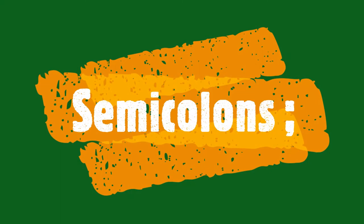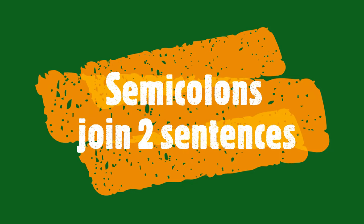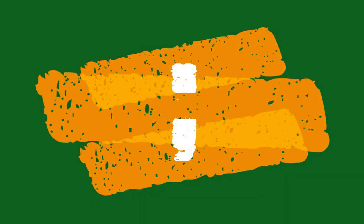This lesson is on semicolons. The number one way to use a semicolon is to join two sentences. This is a semicolon symbol. Notice at the top it has a period — this is to stop the first sentence. At the bottom it has a comma — this is to connect the first sentence and the second sentence.